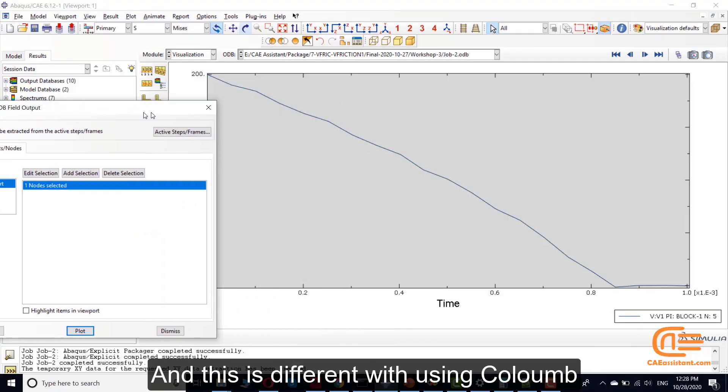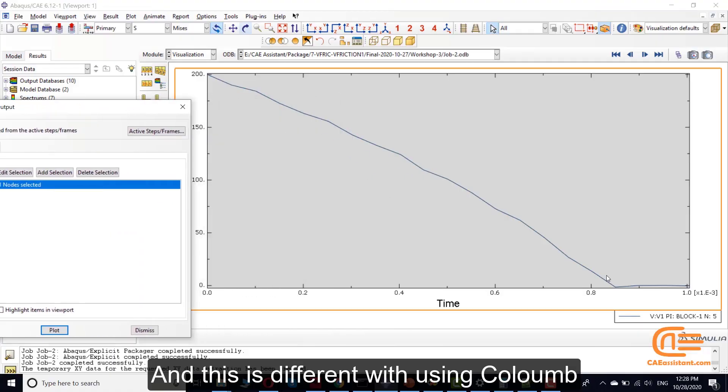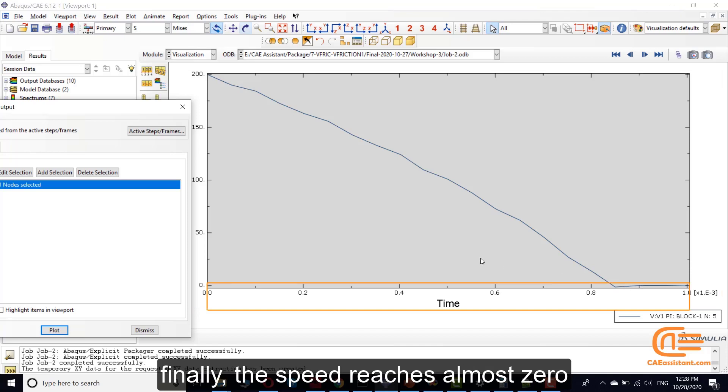This is different when using Coulomb criteria. We can see its speed at any time. Finally, the speed approaches almost zero.